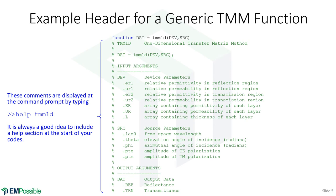I also recommend making a header for your generic function. Here's how I did it for the transfer matrix method. I'm calling this function TMM1D, just to remind myself this is a one-dimensional transfer matrix method. I'm using a MATLAB data structure called a struct, and I use two of them: dev to describe everything about the device, and source to describe everything about the source. At the very top I have the name of the code and a long version of the name, plus the command showing how to call it — so I can copy and paste it into my code.